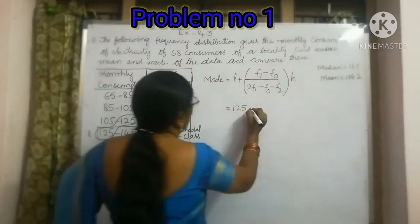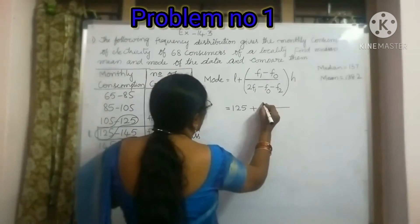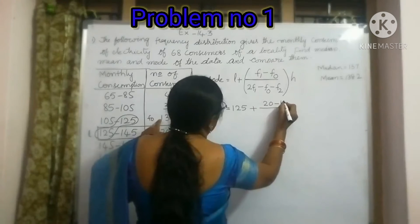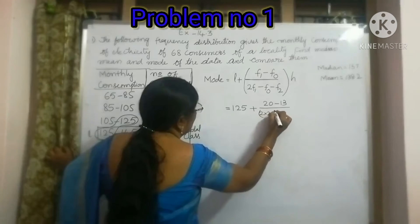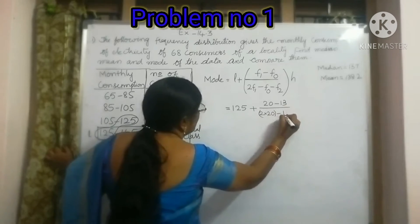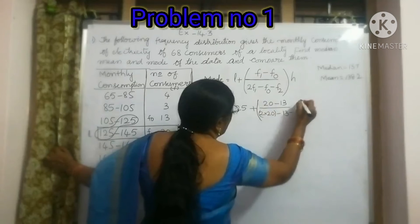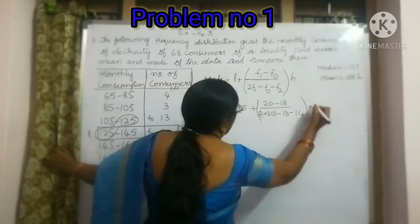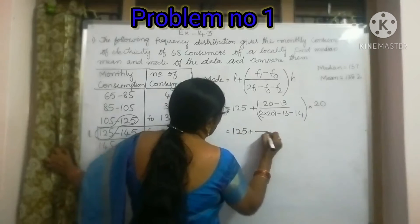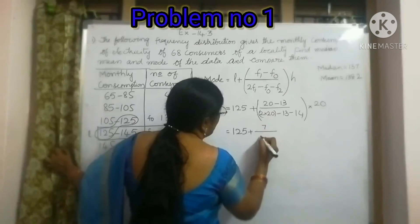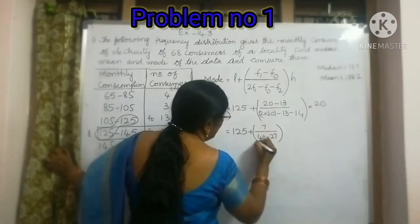We will substitute in this equation. F1 is 20, F1 minus F0 is... F0 is 13, F2 is 14, into H. H is 20. So, 125 plus 20 minus 13 is 7. This one is 40 minus 27 into 20.